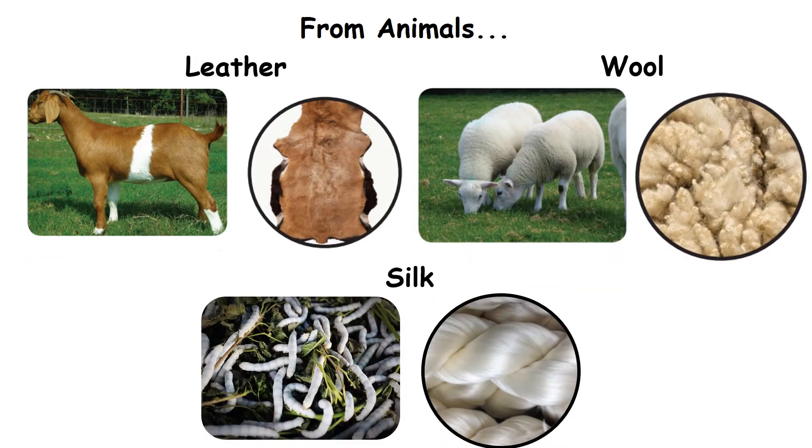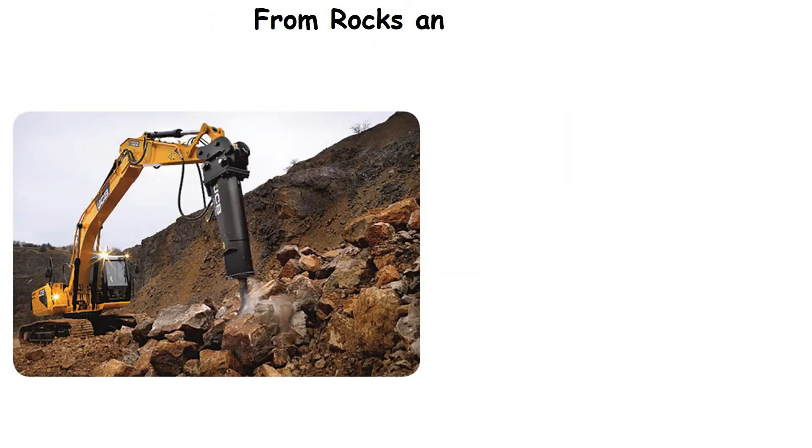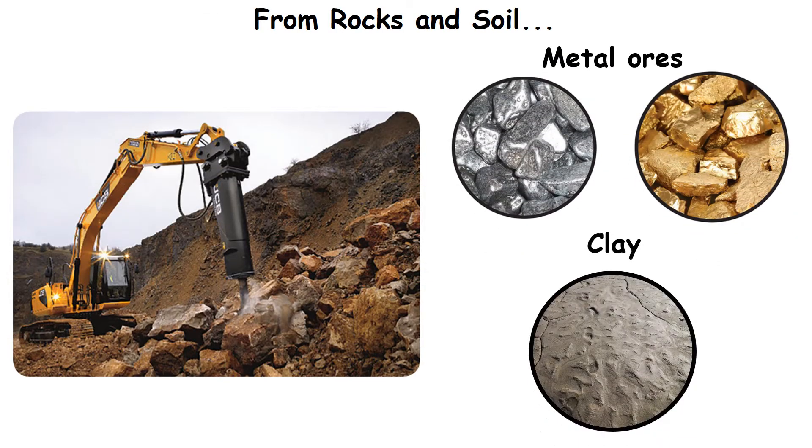From animals, we get leather, wool and silk. From rocks and soil, we get metal ores and clay.